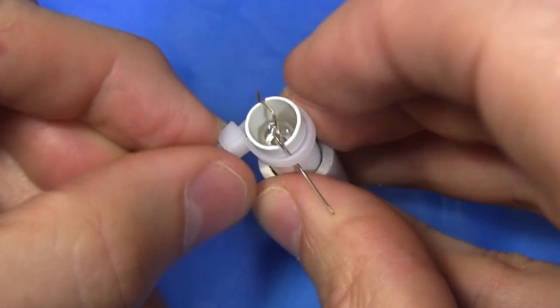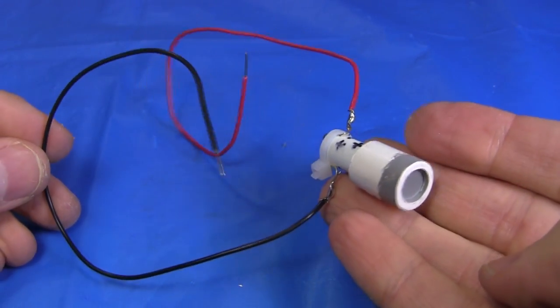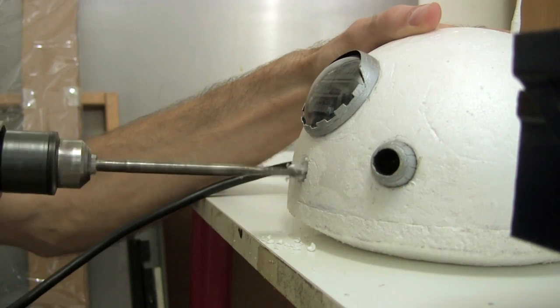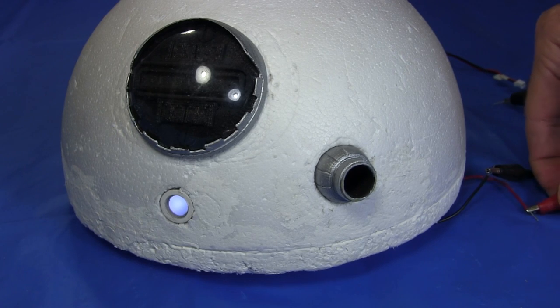And here it is after adding a little gray acrylic paint. And soldering some wires to the LED. I drill a hole for it in the head. And here it is in place and lit up.